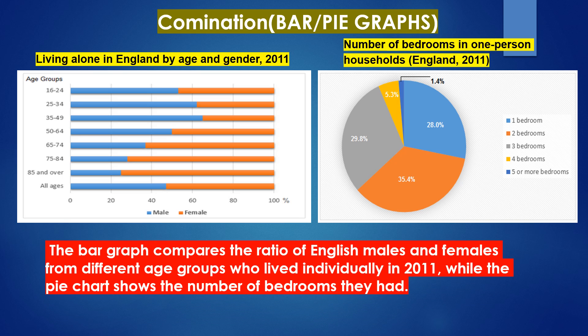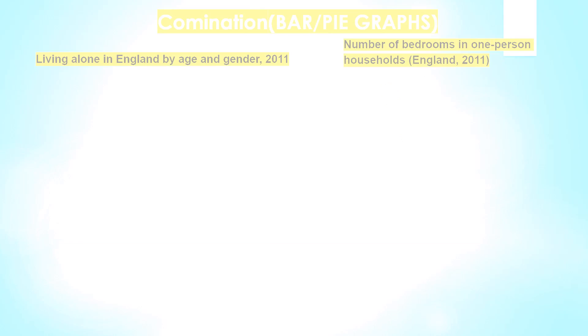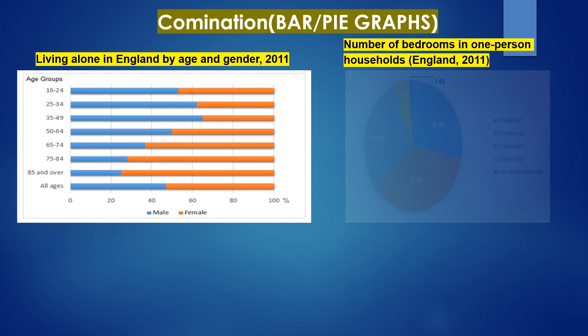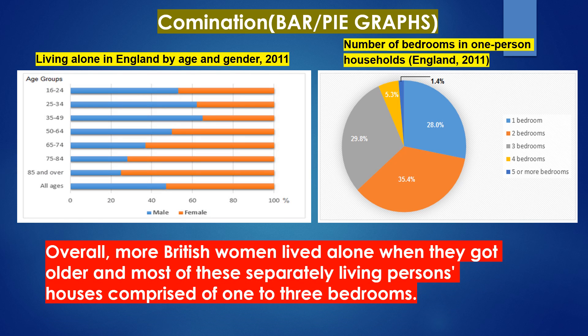Let's take a look at the sample answer that can help you score a good band. The bar graph compares the ratio of English males and females from different age groups who lived individually in 2011, while the pie chart shows the number of bedrooms they had. Overall, more British women lived alone when they got older, and most of these separately living persons' houses comprised one to three bedrooms.